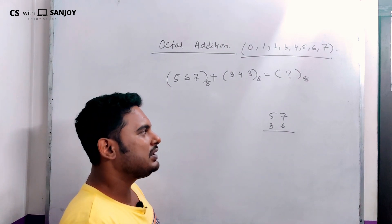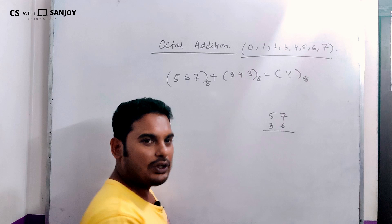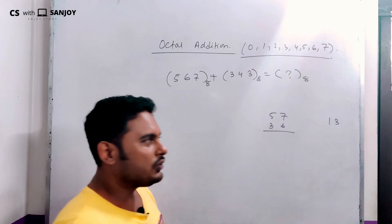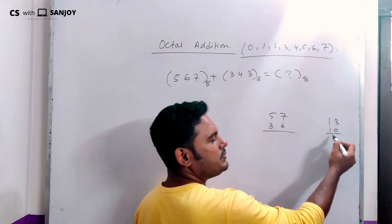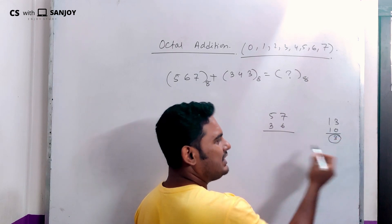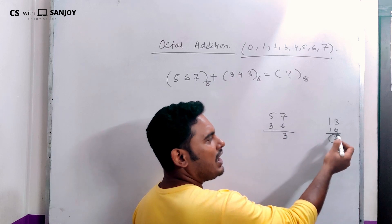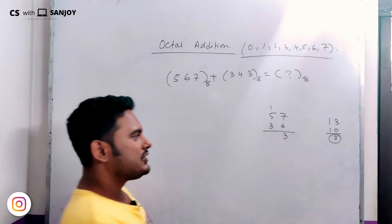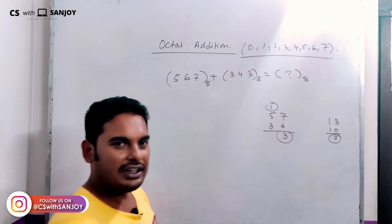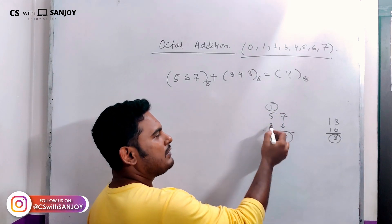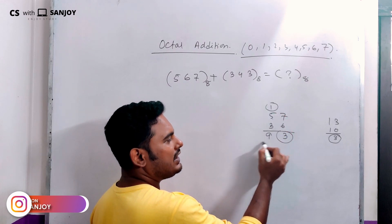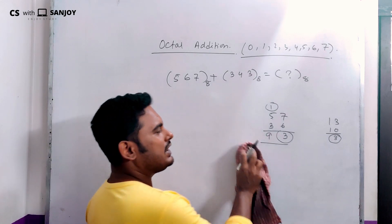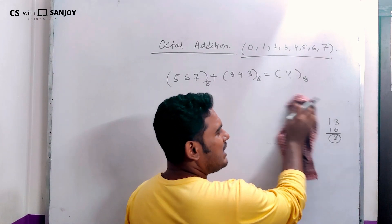In the decimal number system, for example, 6 plus 3 gives 13 — the sum digit is 3, and we carry 1. The next column: we add the digits plus the carry. The result beyond 10 gives a sum and a carry. This carry moves to the next column — this is called the sum and this is called the carry in the decimal number system.